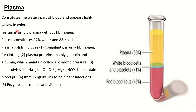Plasma constitutes 92% water and 8% solid. Plasma contains solids which include coagulants, plasma proteins, electrolytes, immunoglobulins, hormones, vitamins, and enzymes.